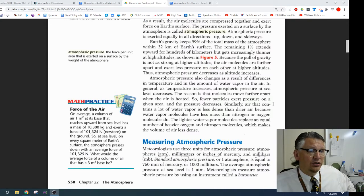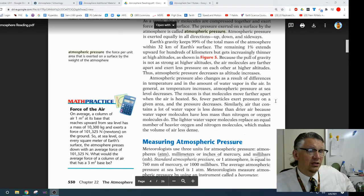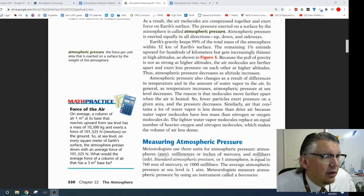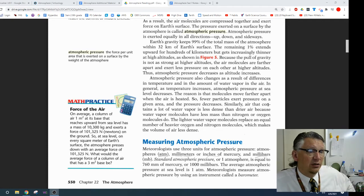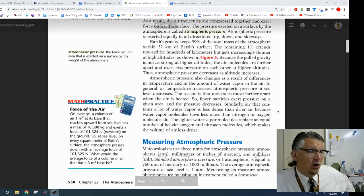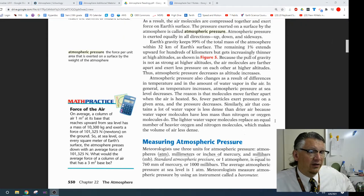Atmospheric pressure also changes as a result of differences in temperature and in the amount of water vapor in the air. In general, as temperature increases, atmospheric pressure at sea level decreases. The reason is that molecules move further apart when the air is heated. So, fewer particles exert pressure on a given area, and the pressure decreases. Similarly, air that contains a lot of water vapor is less dense than drier air because water vapor molecules have less mass than nitrogen or oxygen molecules do. The lighter water vapor molecules replace an equal number of heavier oxygen-nitrogen molecules, which makes the volume of air less dense.